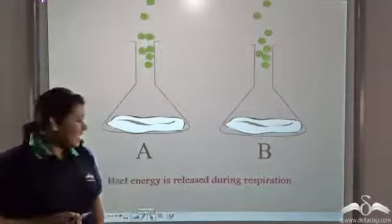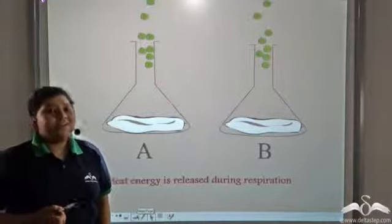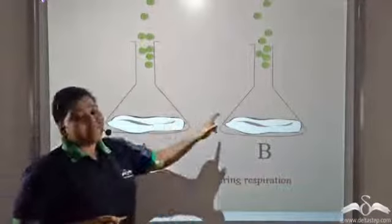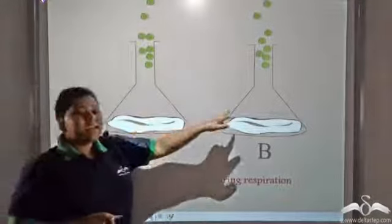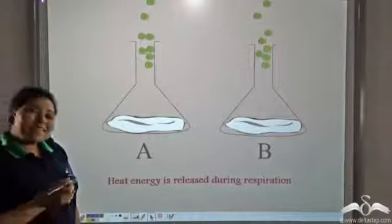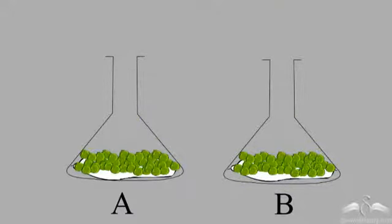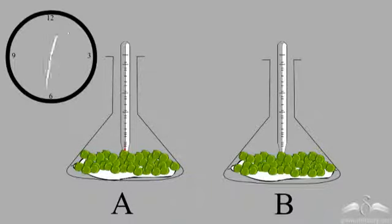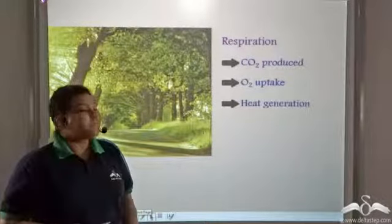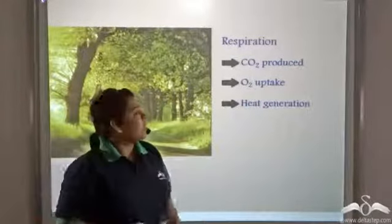Next, let us see if heat energy is released during respiration. Take two conical flasks A and B and put beans — heat-killed beans in one and germinating beans in the other. Some water is sprinkled and then a thermometer is put in. Since flask A has germinating seeds, they will respire, and the mercury goes up in the thermometer, proving that heat energy is released during respiration. The heat-killed beans in flask B do not respire, so there is no increase in temperature. It is thus proved that heat is generated during respiration along with carbon dioxide.